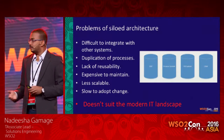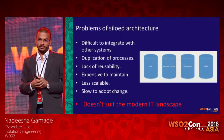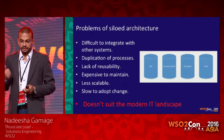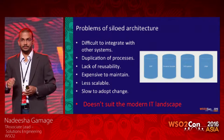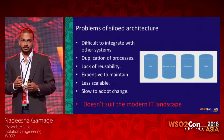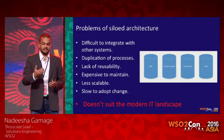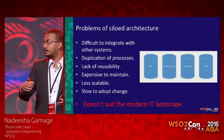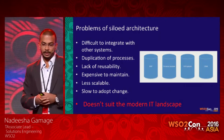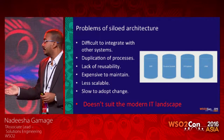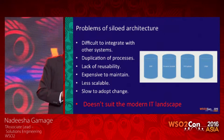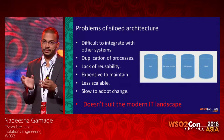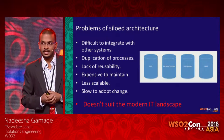The problems this architecture brings: the primary problem is that it is difficult to integrate with other systems. Since there are no standard interfaces, it is difficult to integrate one silo with another. For example, you may have ERP, HR, finance, and a CRM system, and it is difficult to integrate the operations of each of these systems in a standard way.